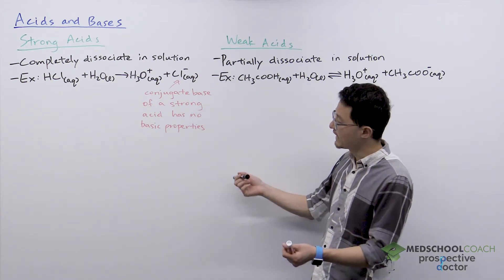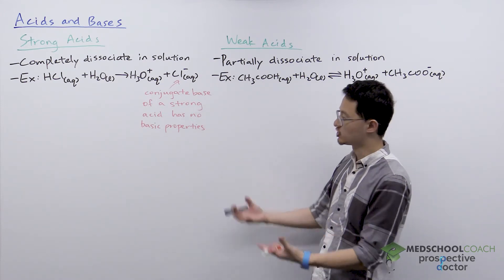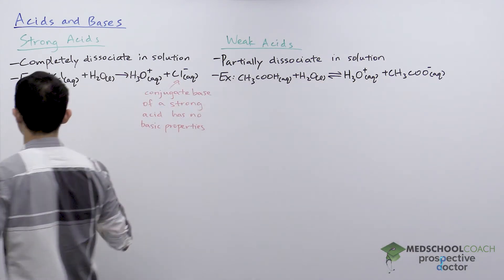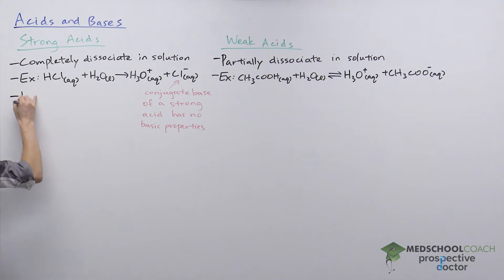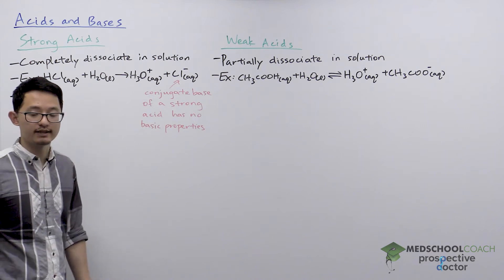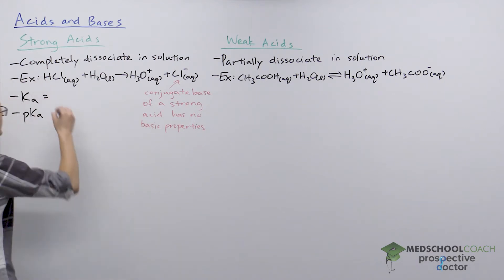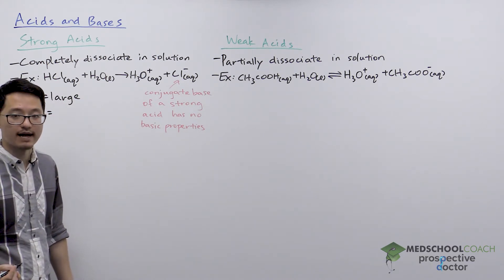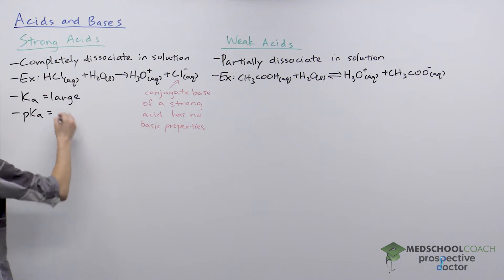Now, as a strong acid, if we're looking at the strength, we recall from our previous video that we quantify acid strength with two values, Ka as well as the pKa. Ka is directly proportional to acid strength, so if we're looking at a strong acid, we're looking at a large Ka value. And pKa is inversely related to acid strength, so a strong acid has a small pKa value.